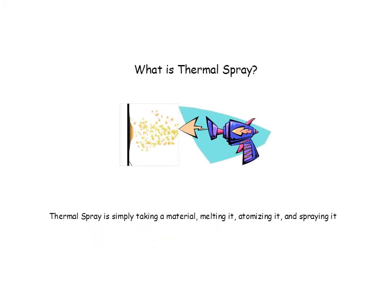A question I'm often asked is: what is thermal spray? When you first see the equipment, it looks pretty complex and the technology can be intimidating. But quite simply, all it is is taking a material — which is a powder or metal — melting it, atomizing it, and spraying it. It kind of looks like spraying paint, except we're spraying molten materials instead of paint.